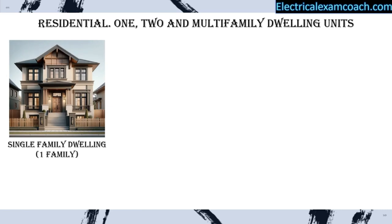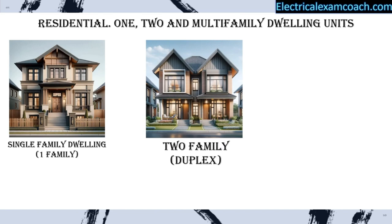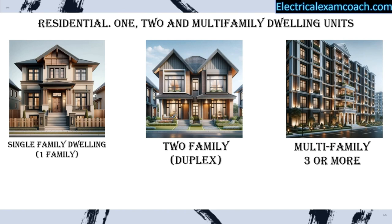Before we go any further, we need to define what is a 1, 2, and multifamily dwelling unit. A single-family dwelling unit is a single standalone structure. A two-family, often called a duplex, is two homes joined together. Anything three or more is called a multifamily dwelling unit. It's very important to understand these definitions because there are codes that apply in certain areas — not only in electrical, but also in building, mechanical, plumbing, and zoning — and these definitions are universal across all these trades.